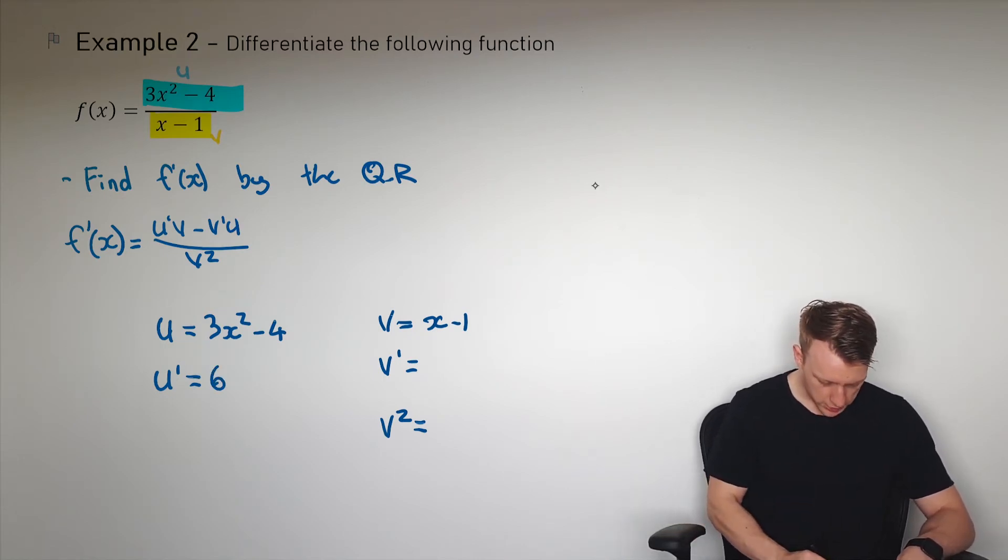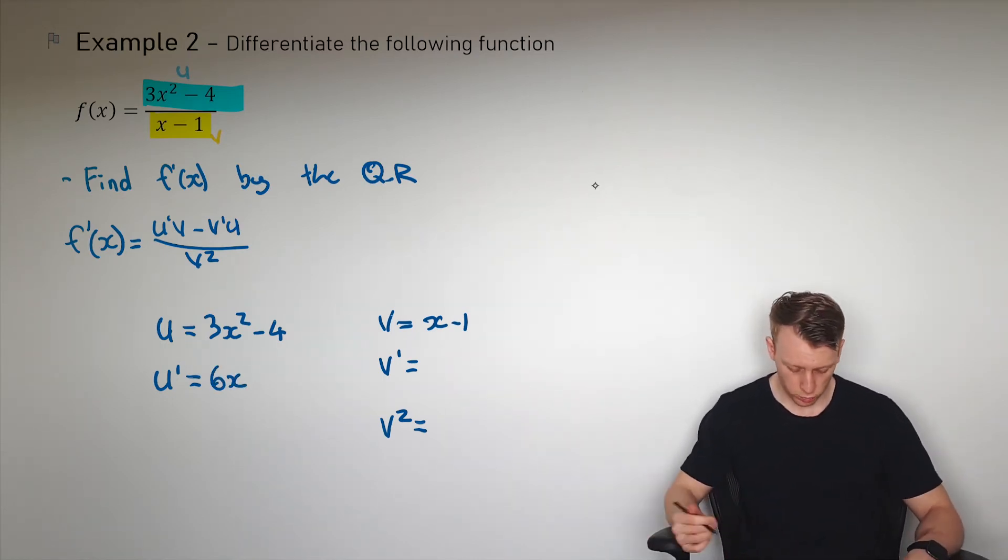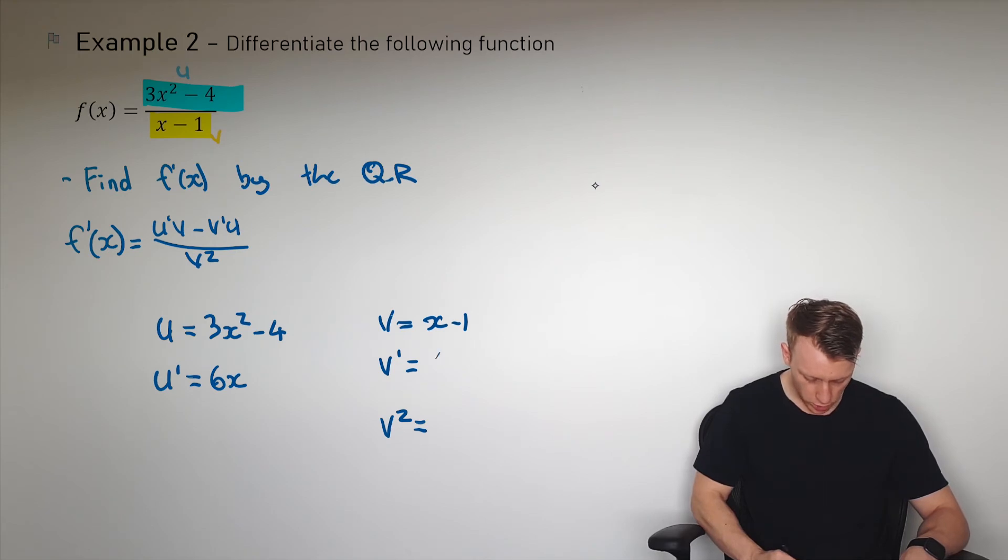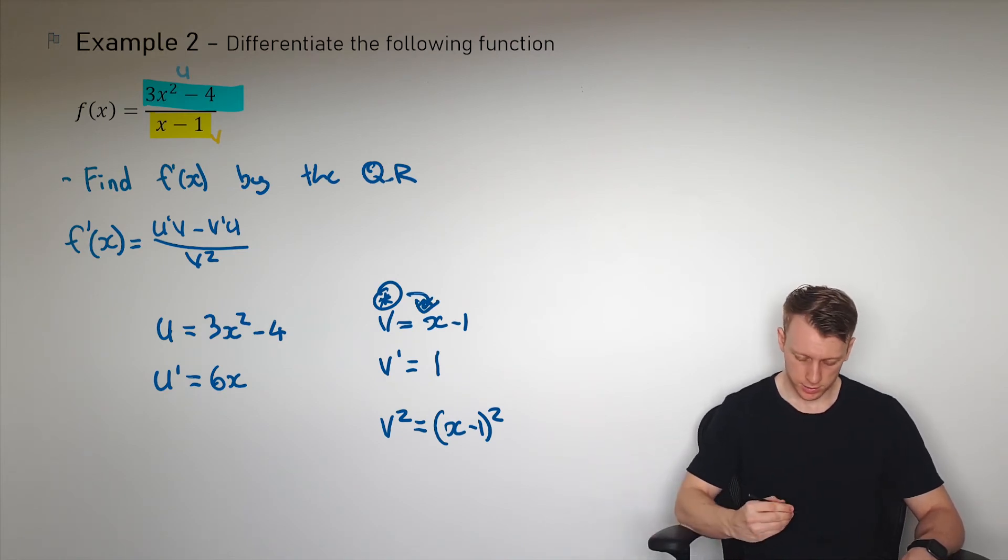So u' is equal to 6x, we can just apply the power rule there. v' is equal to 1, again just applying the power rule there. And v² is this guy here squared, which is what we have written down.